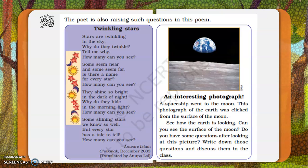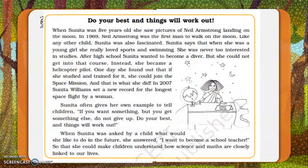Because of the atmosphere, the twinkling effect occurs. Now there is an interesting photograph — a spaceship went to the moon and this photograph of the Earth was clicked from there. How is the Earth looking? Can you see the surface of the moon in the foreground? Do you have some questions? We are going to start this part in our next video, my dear children.